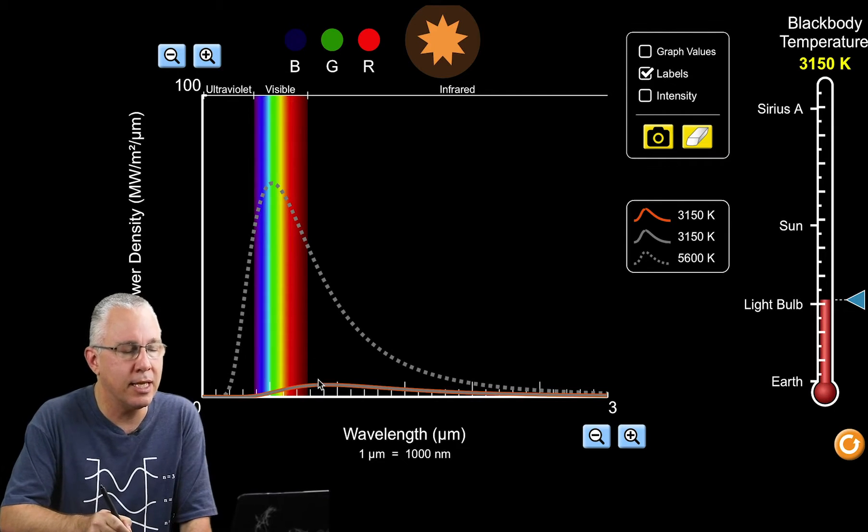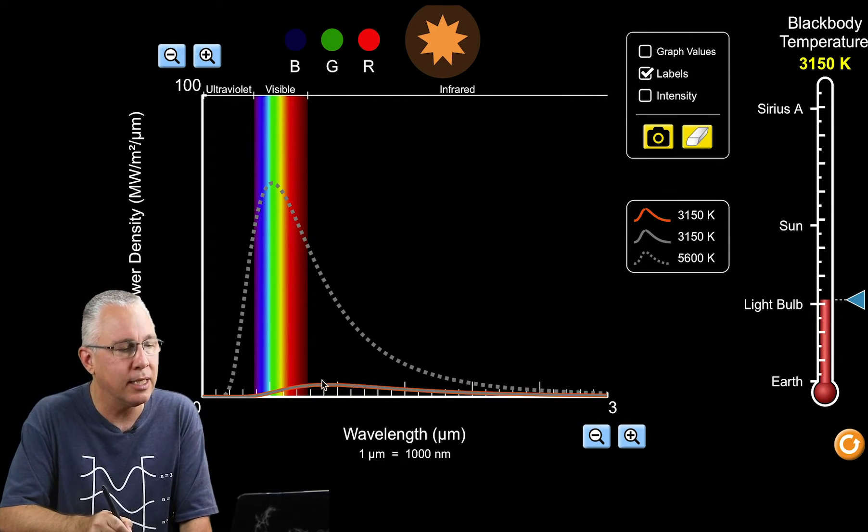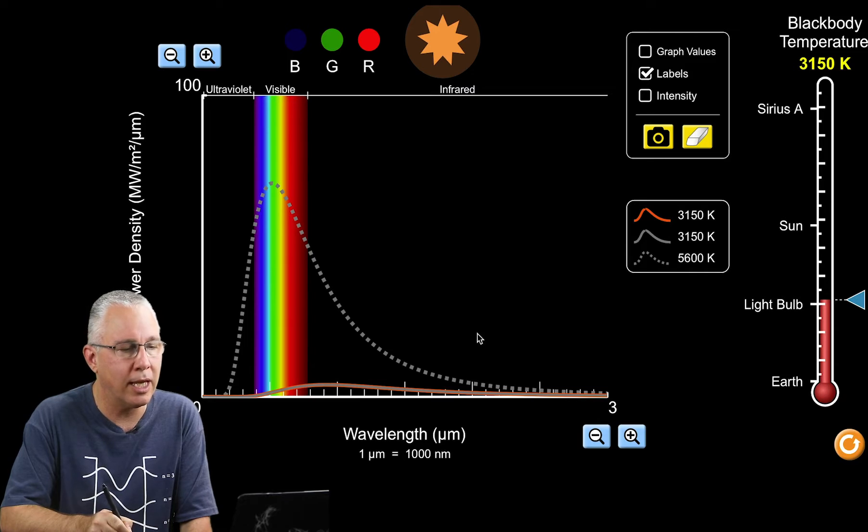We have a drop in intensity for each wavelength, but we also have a shift towards the right. The wavelength with the greatest intensity has moved towards the longer end.